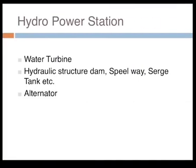General station auxiliaries include crane, lift, air compressor, and water pump. For the hydro power station, main elements are water turbine, hydroelectric structure, dam, surge tank, headworks, and alternator. Auxiliaries include exciter, pilot accessory, overhead crane, and gate open motor.